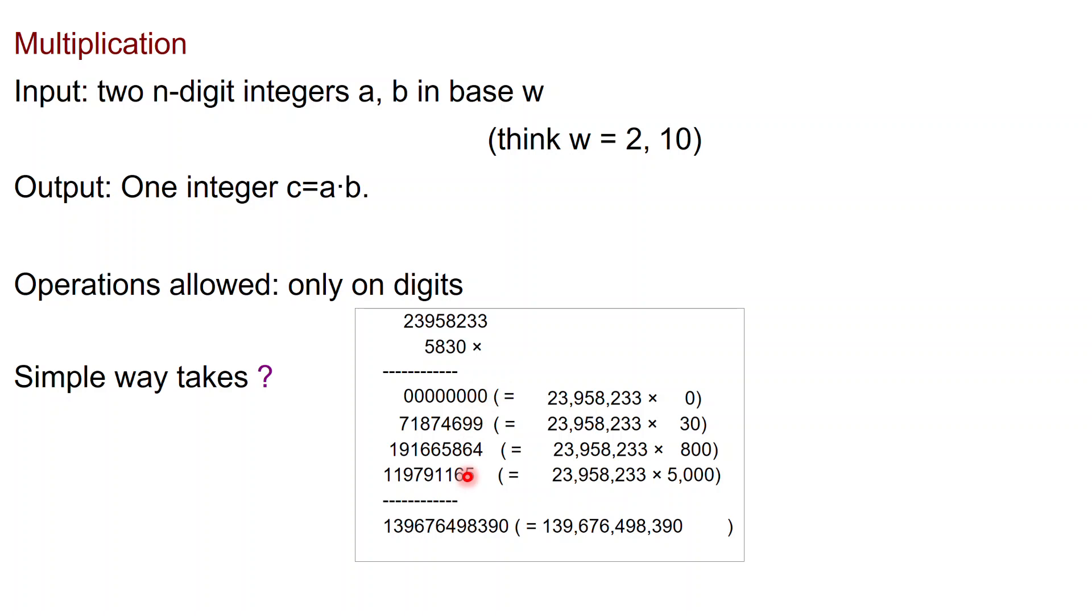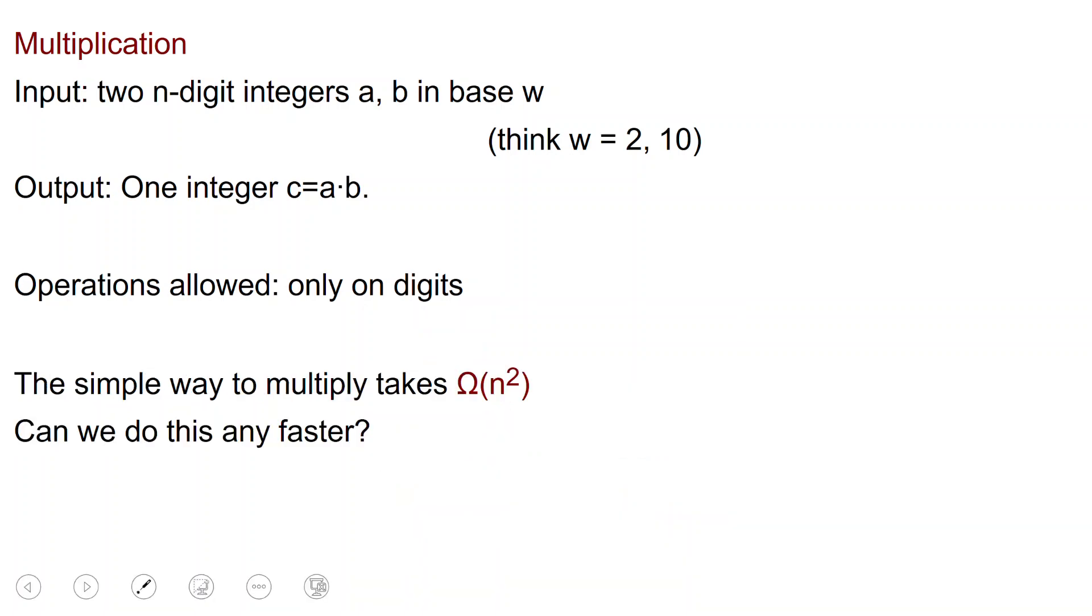How long does this thing take? We can observe that just writing down this table takes quadratic time. If you have n digits here, each of these things will have at least n digits, and you may have n rows. So just this thing takes quadratic time.